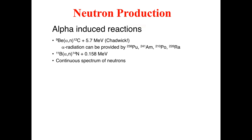First, let's talk about alpha-induced reactions. In this kind of reaction, we basically bombard beryllium-9 with alpha particles. As a result, we get neutrons along with carbon-12. This is the form of reaction which was performed for the first time by Chadwick during the discovery of the neutron. During this particular reaction, 5.6 MeV of energy is produced.